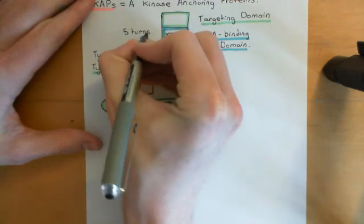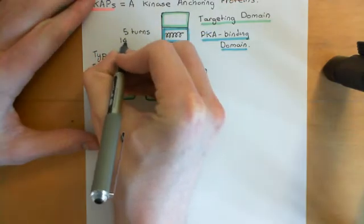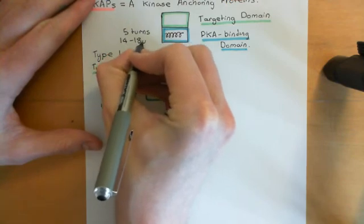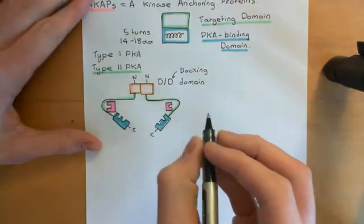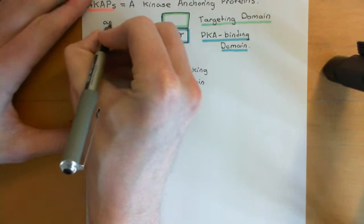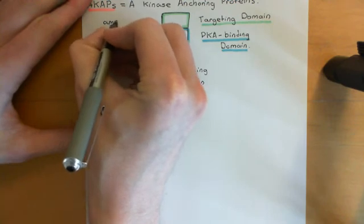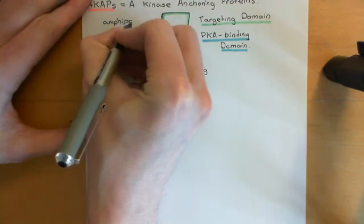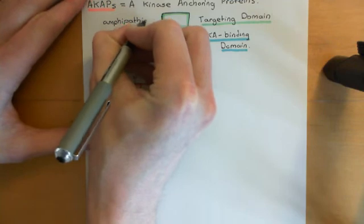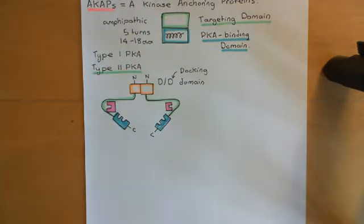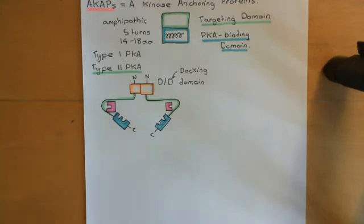The amphipathic helix is only around 14 to 18 amino acid residues in length, and it has the property of being amphipathic. What does amphipathic mean? It means you have both hydrophobic portions — portions that don't interact well with water and interact very well with lipid molecules — and also charged portions.